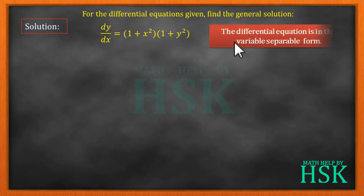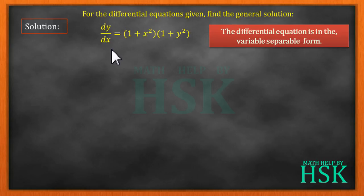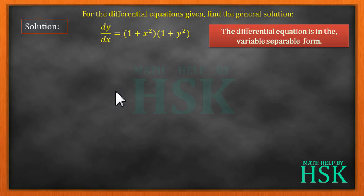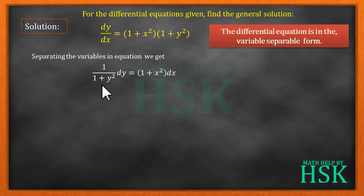Firstly, we see that the differential equation is in the variable separable form. Therefore we start with separating the variables. We cross multiply dx to the right hand side and 1 plus y squared to the left hand side. Separating the variables in the equation we get: 1 by (1 plus y squared) dy is equal to (1 plus x squared) dx.